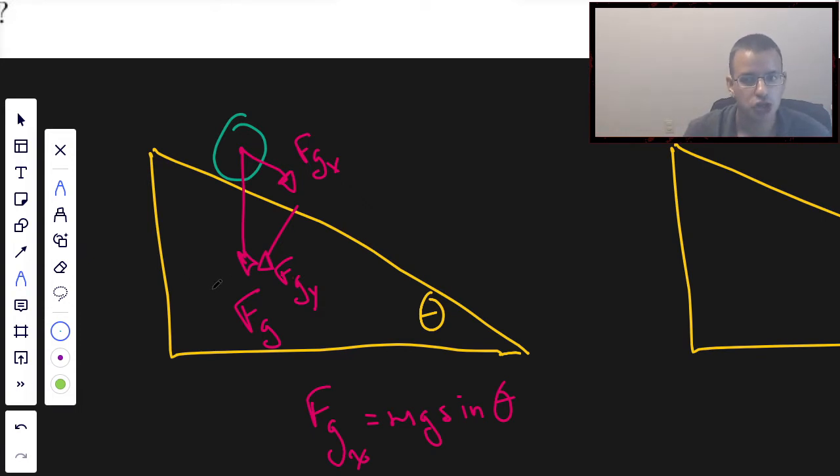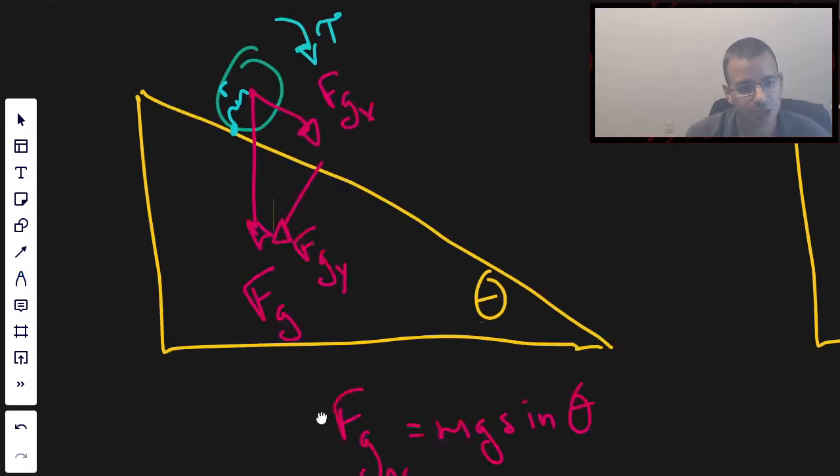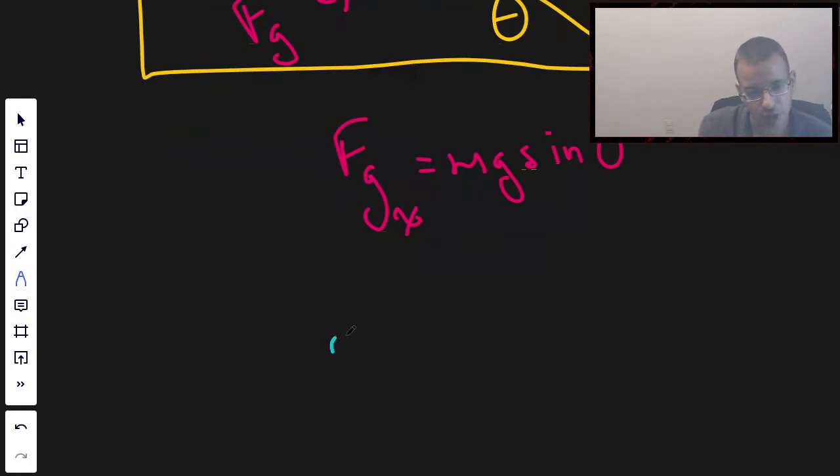So we want to find torque, what's causing it to roll. So what's causing it to roll is we are going to have a radius R right there, a moment arm, and we're going to have a force FGX going down the plane, so we're going to have a torque in that direction.